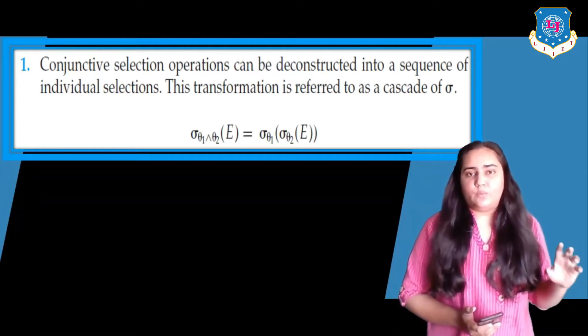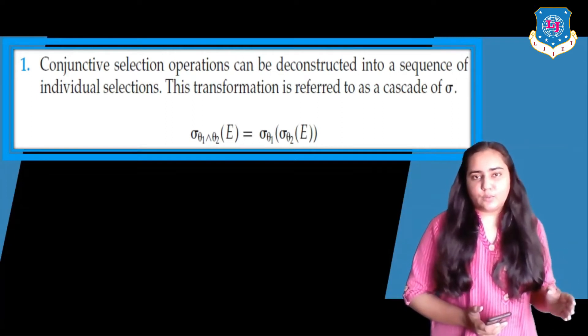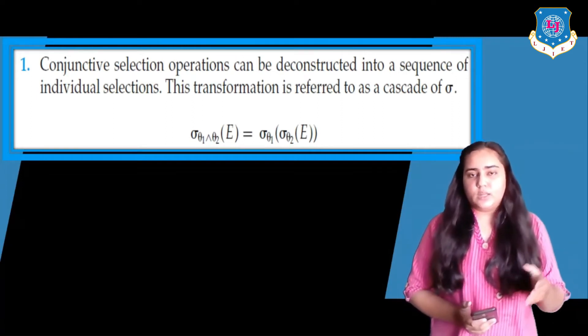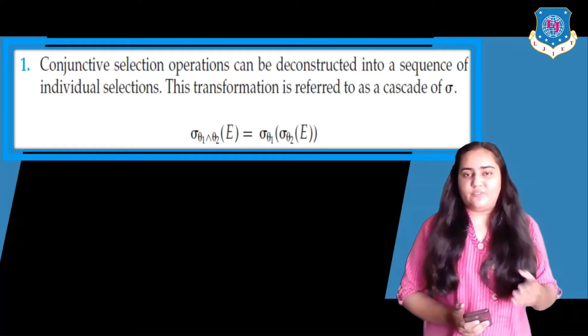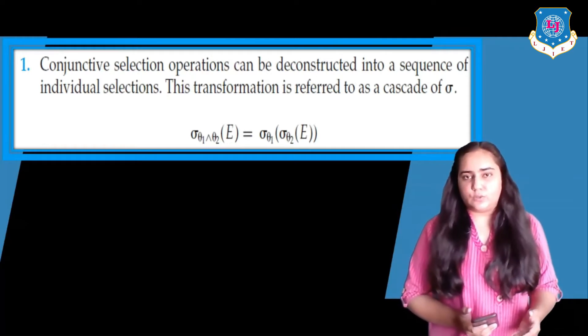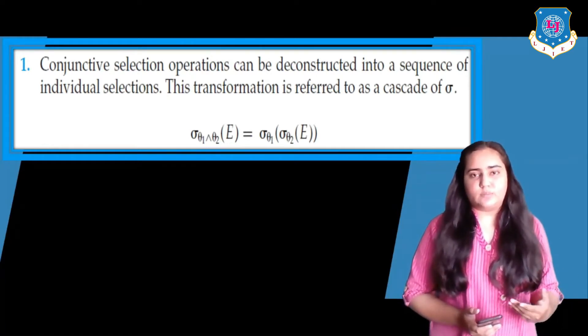Whenever there's a conjunctive selection, you can convert this into sigma theta 1 and then put a bracket sigma theta 2, so you can separate out your conditions in this manner.